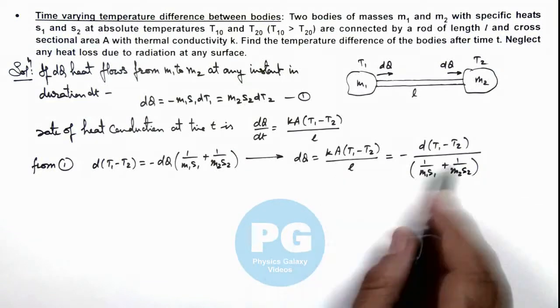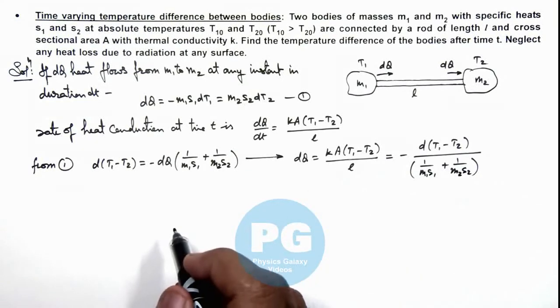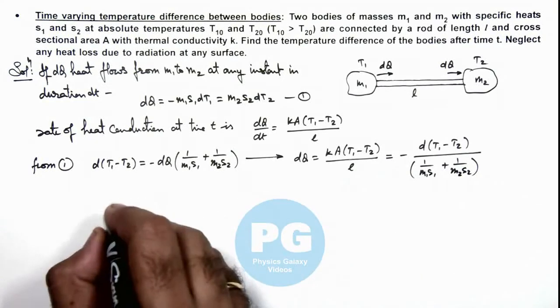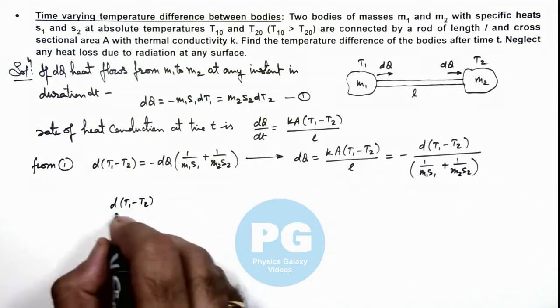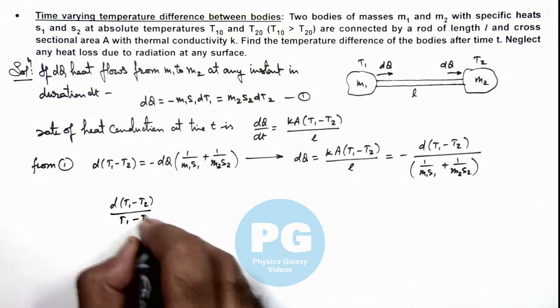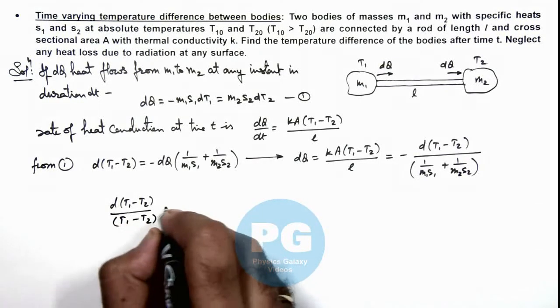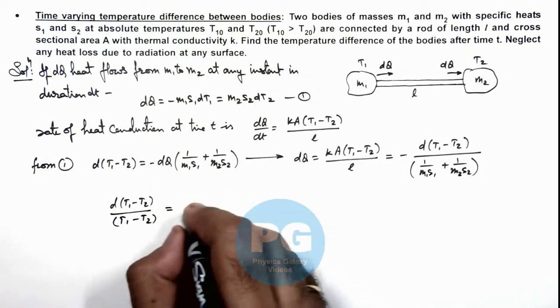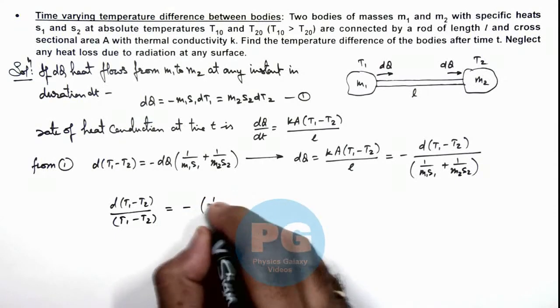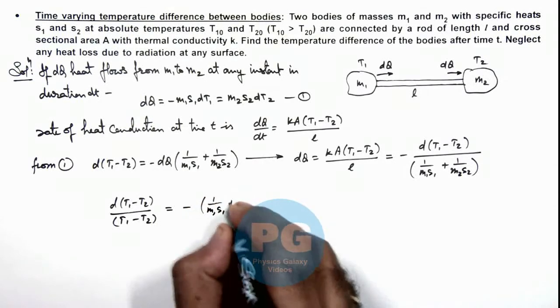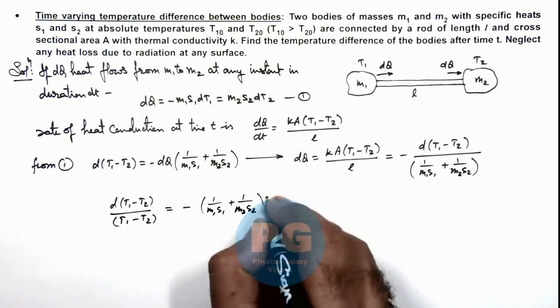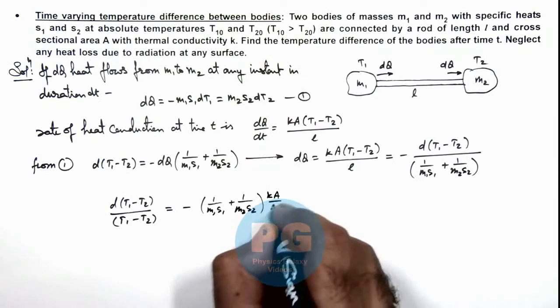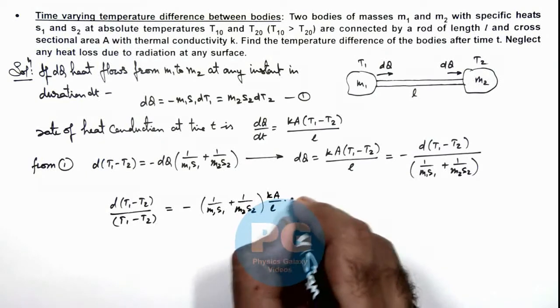So rearranging these terms, here we can see d(T₁ - T₂)/(T₁ - T₂) is equal to negative of (1/m₁s₁ + 1/m₂s₂) multiplied by kA/l multiplied by dt.